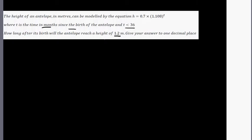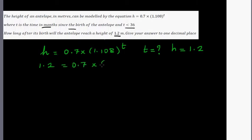So how can we do this? We've got h here: h is 0.7 times 1.108 raised to t. The question is what is t, after how many months? The height is 1.2 meters. So let us put h here and solve for t. So 1.2 is equal to 0.7 times 1.108 raised to t.